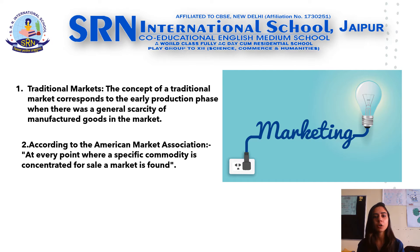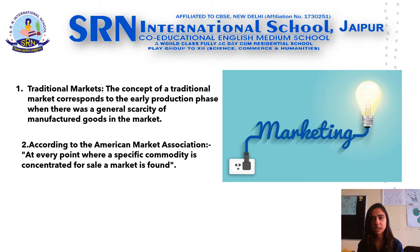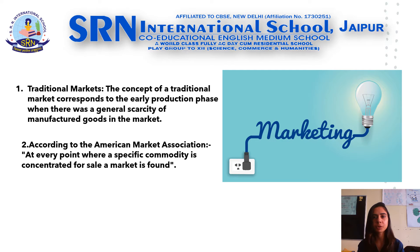Secondly, according to the American Market Association, the concept of modern market was defined as: at every point where a specific commodity is concentrated for sale, a market is found. This definition gives the traditional meaning of market. The emphasis is on place — the goods available for sale are brought to a specific place and the buyers of those goods reach those places for buying them.